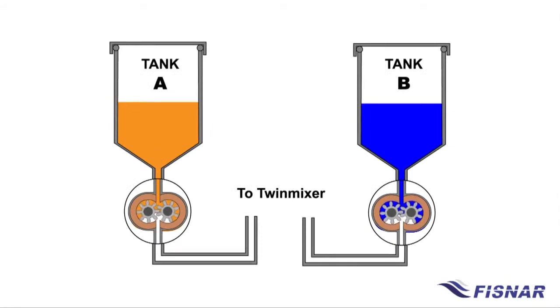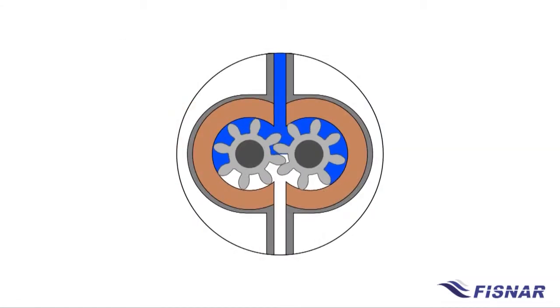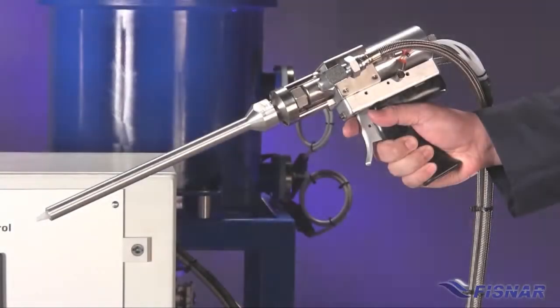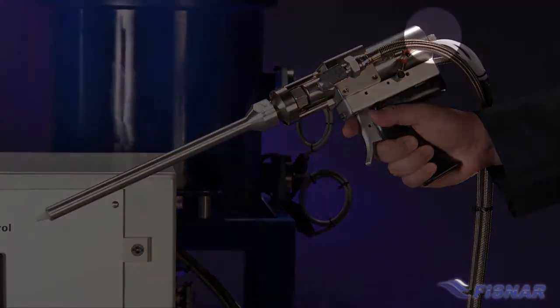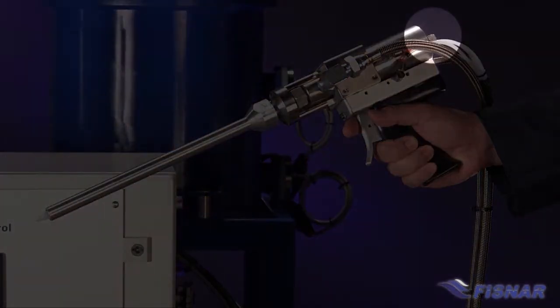Precision metering gear pumps will meter and deliver the correct ratio and shot size to the twin mixer fed by industrial hoses. The twin mixer valves include an adjustable snuff-back non-drip feature. The adjuster is located at the rear of the twin mixer.